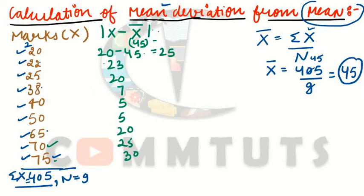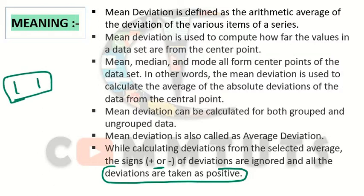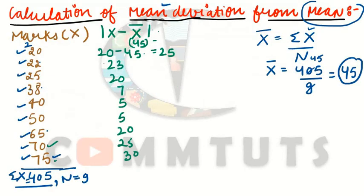Keep in mind that negative deviations will be ignored — we draw absolute value bars, so negative deviations are treated as positive. When we calculate mean deviation, we ignore the plus and minus signs and consider all deviations as positive. We draw two straight lines (absolute value bars) around the deviations.